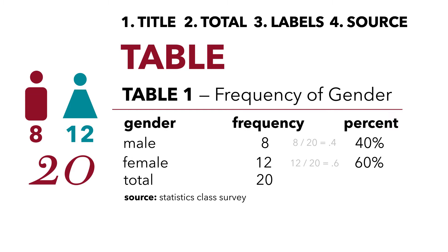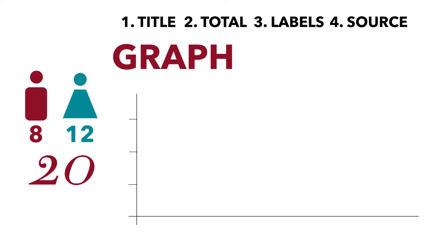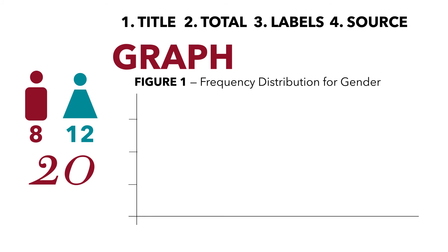We've just created a table to display our frequency distribution for gender. Let's now create a graph. Graphs are handy because they display a lot of information very quickly. There's my vertical and horizontal axis, with tick marks. We already know we need a title, so this is Figure 1 — Frequency Distribution for Gender. We have two categories: Male and Female.